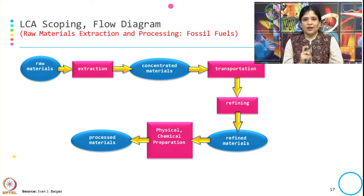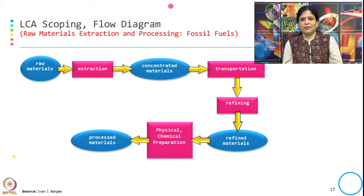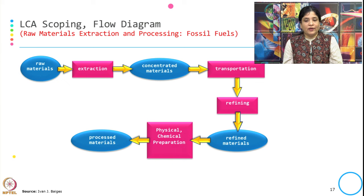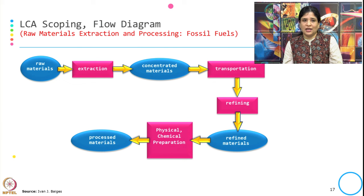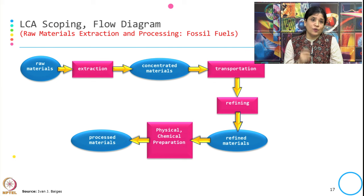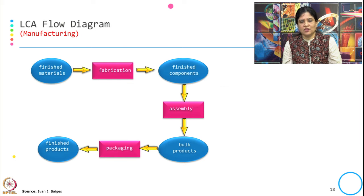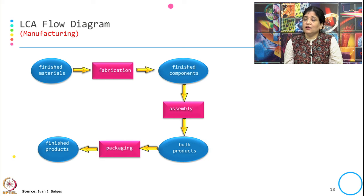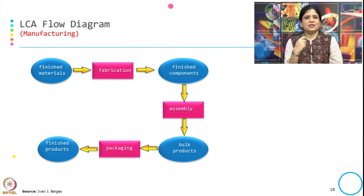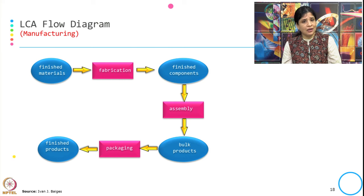This is the LCA scoping and flow diagram of a silk well. It starts with raw material extraction, then concentrated material, then transport, refining, refined material, physical-chemical preparation, and finally the process material. In each step there are inputs and waste generated. Similarly for manufacturing, from the finished material we go through fabrication, finished component, assembly, bulk product, packaging, and finally the finished product — each step also having inputs and waste with environmental impact.